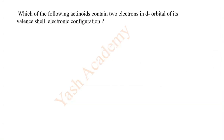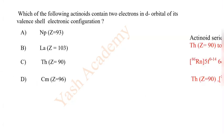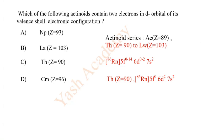Which of the following actinoids contain two electrons in d orbitals of its valence electronic configuration? Options: A Neptunium, B Lanthanum, C Thorium, D Curium. So correct answer option is C: Thorium.